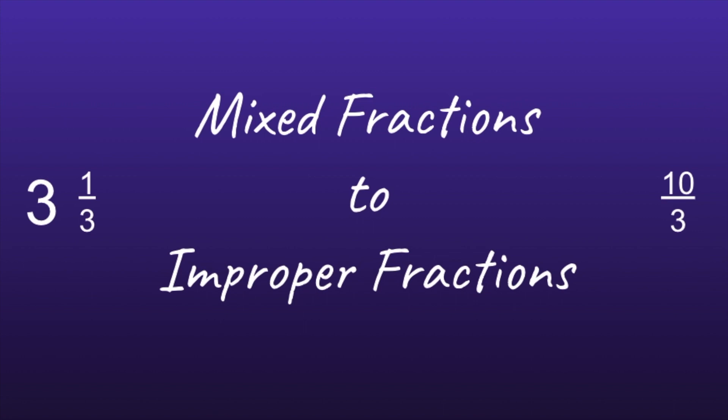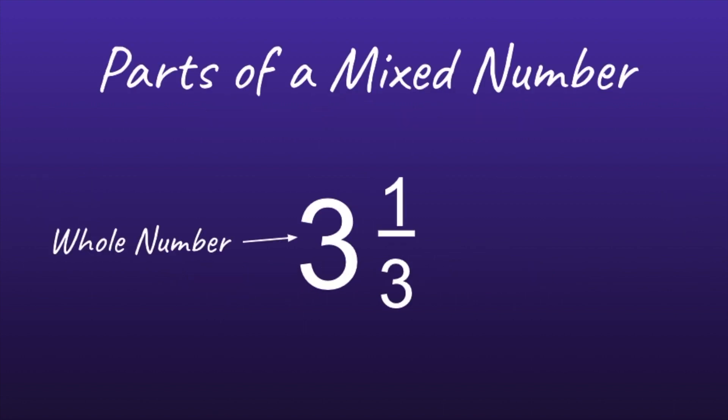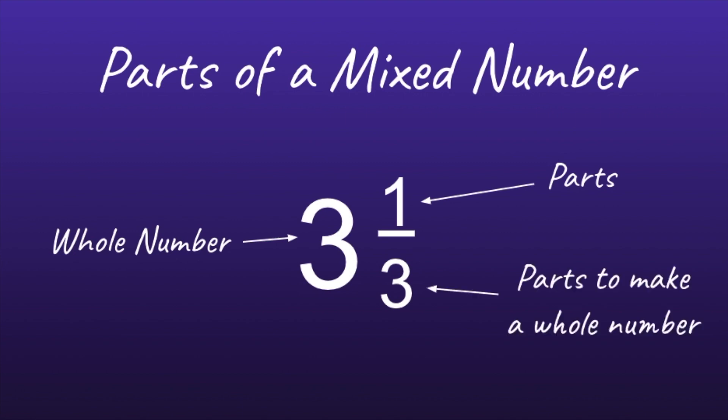Mixed fractions to improper fractions. Parts of a mixed number: three will be the whole number, the 1 is going to be the number of parts, and the denominator, the 3, is going to be the number of parts to make a whole number.